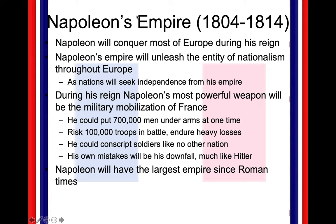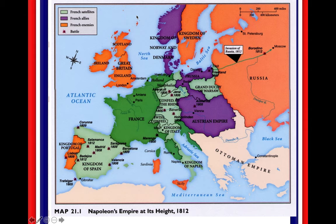We're going to see Napoleon create the largest empire in Europe since Roman times. He is going to be very successful until he isn't. This image shows the height of the empire in 1812. These French satellites are just areas of control. You can see French allies — he's going to force Prussia and Austria to be his allies — and he's going to rule over parts of Spain, Italy, parts of Italy outright, in the different shades of green.